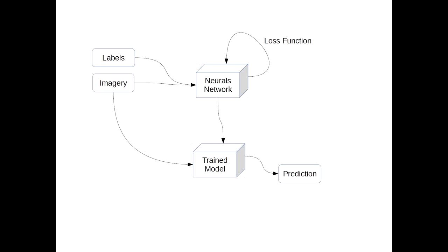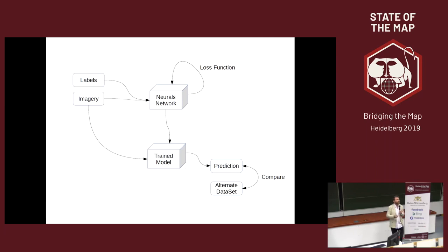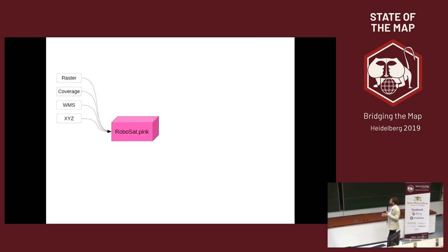Once you've trained this model enough, you can use your imagery with the trained model and predict something related to the kind of label you trained your model with. So if you train with buildings, you get buildings. If you train with forest, you get forest, and so on. The point is also to compare your prediction with something else — for instance, OpenStreetMap vector data — and so you're able to train a model and to compare with a latent dataset.